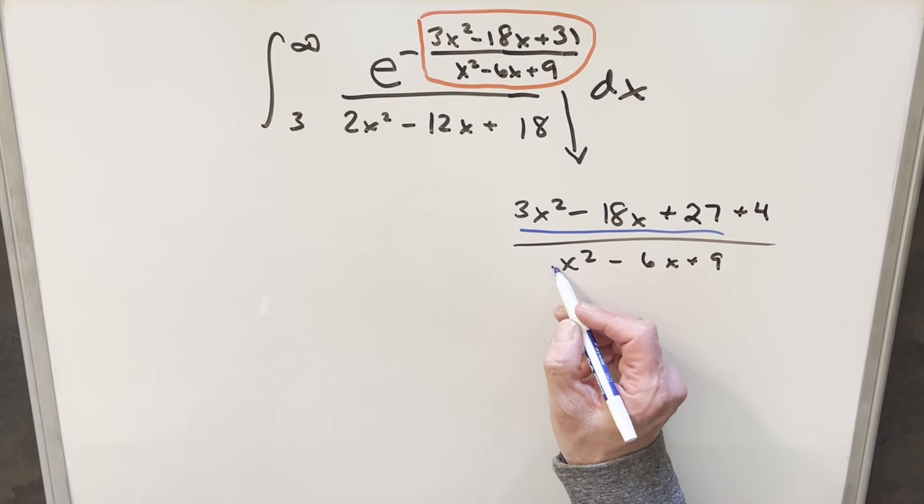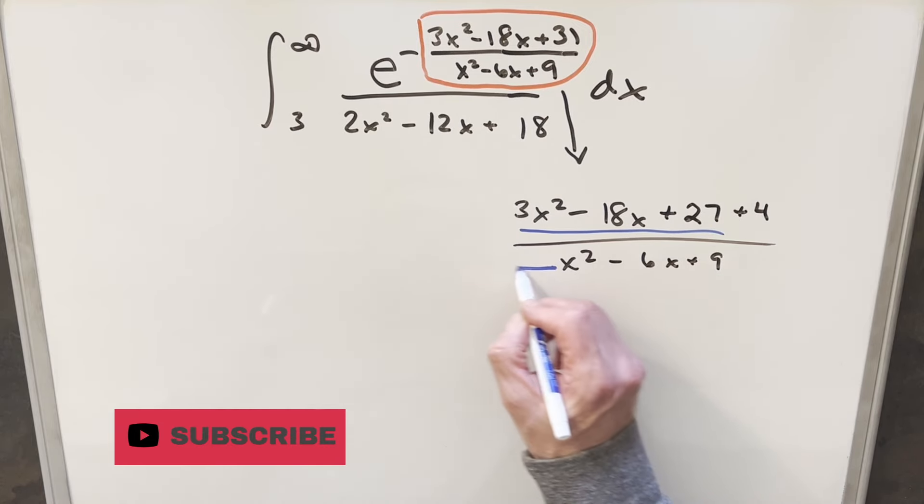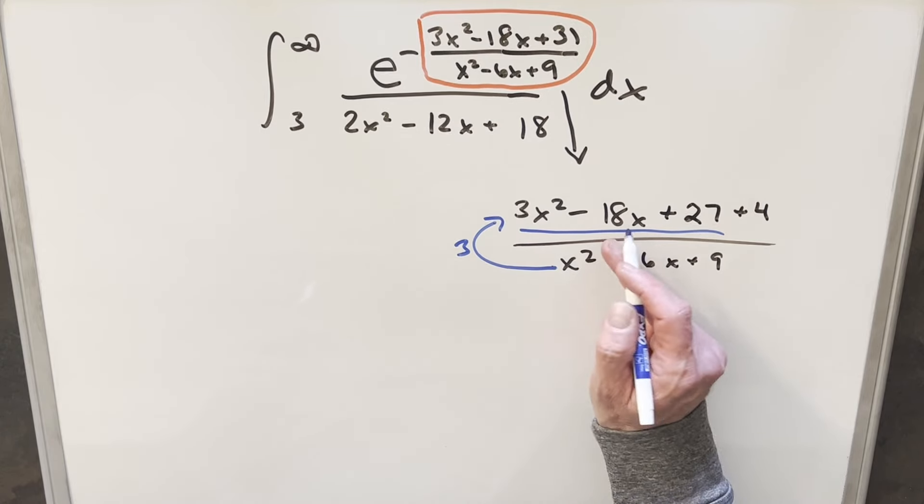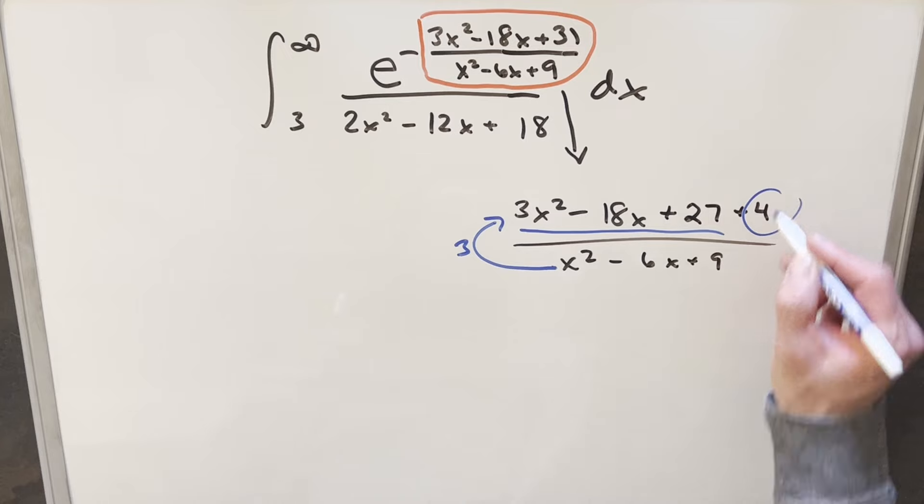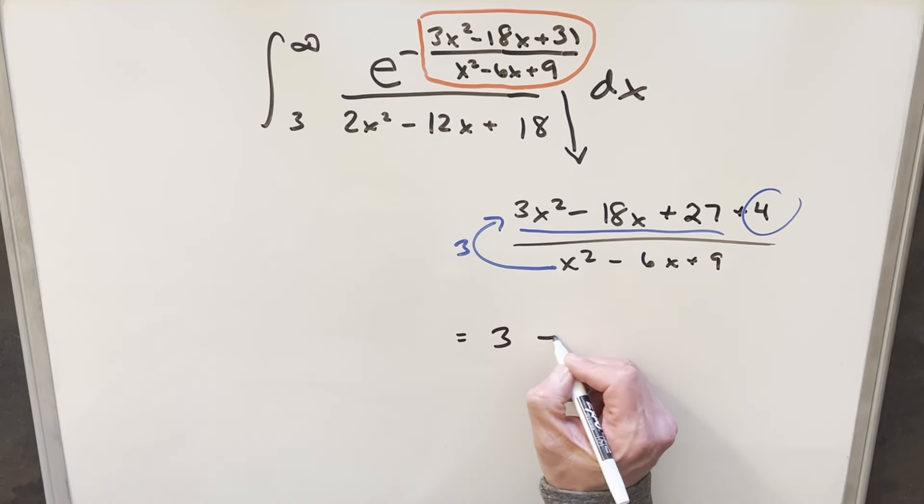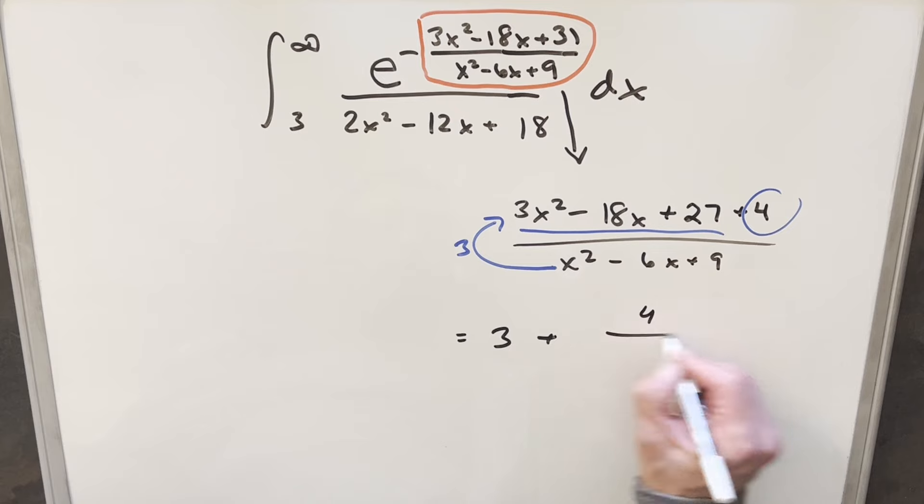But now the reason I broke it up that way is if you'll notice that if you multiply this denominator by three here, you get exactly this part in the blue here. And that's why I split off this four. Then splitting up this fraction, the first part's just going to be three. And the second part, we'll just have four over X squared minus six X plus nine.